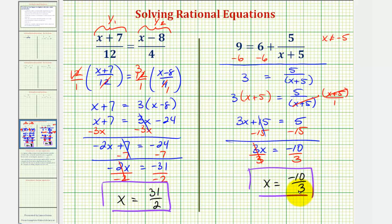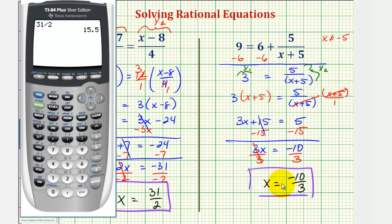And once again, let's verify our solution by graphing. We can either use this form of the equation or this form here. Let's go ahead and use this form here. So we'll enter y sub 1 equals 3, and y sub 2 equals this quotient here. Let's get the decimal value of negative 10 thirds, which is negative 3.3 repeating. So this should be the x coordinate of our point of intersection.